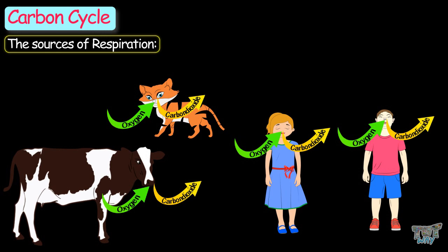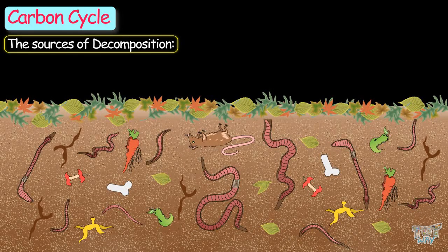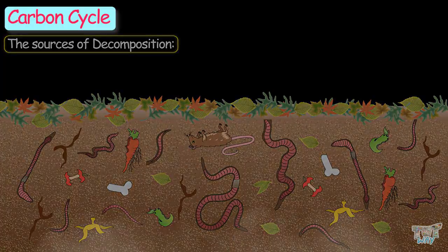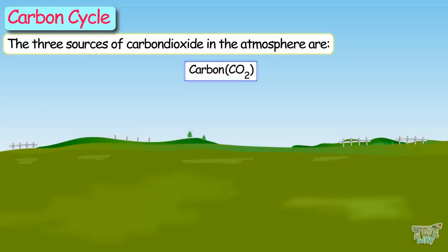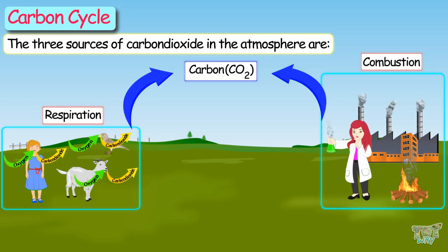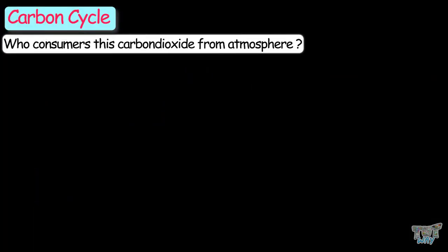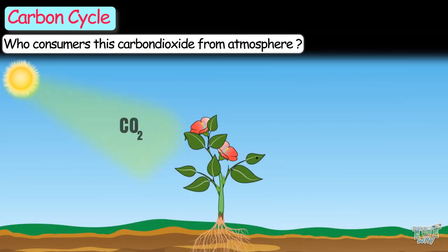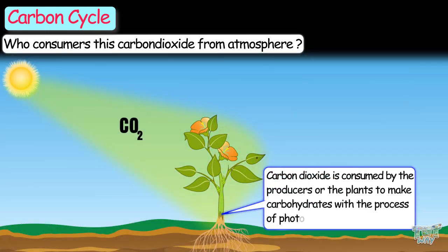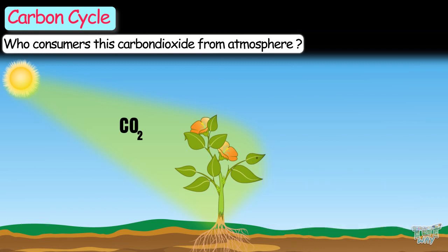The third source of carbon in the atmosphere is decomposition. Decomposition of dead remains of all plants and animals releases carbon dioxide into the atmosphere. The three sources of carbon dioxide in the atmosphere are respiration, combustion, and decomposition. Now let's see who consumes this carbon dioxide. Carbon dioxide is consumed by producers — the plants — to make carbohydrates through the process of photosynthesis. So carbon dioxide is used by all the plants, and carbon dioxide becomes part of these producers.